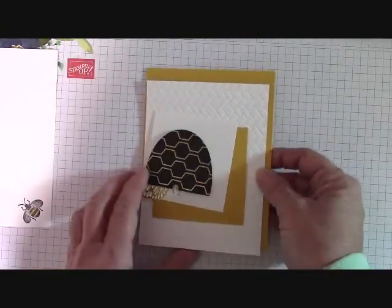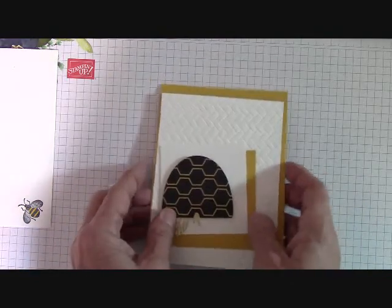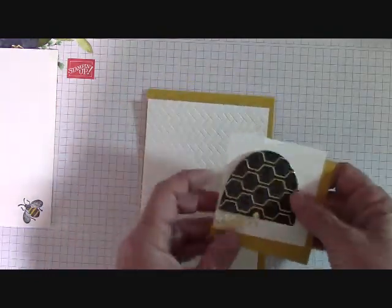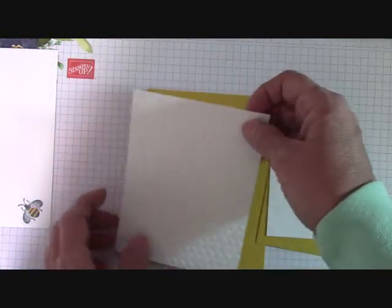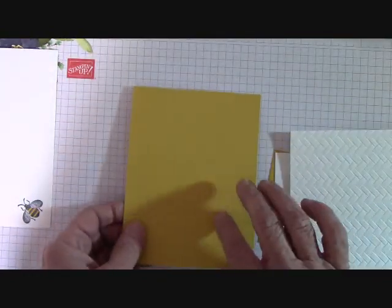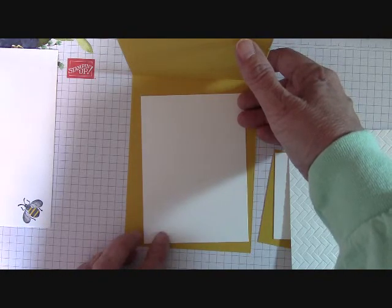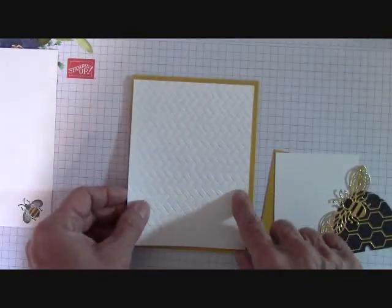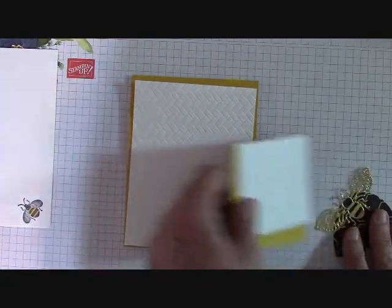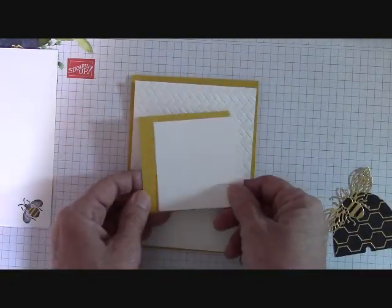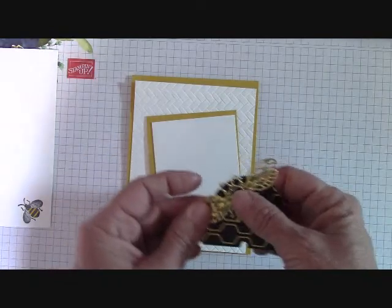Everything will come blank. You can use whatever stamp set that you want. Of course, if you have this one, it works perfectly, right? So what we want to do now is, and this is what you'll get right here. You'll get all these pieces. I'm going to cut out this bee for you. I'm going to emboss this here for you. You'll have a base of crushed curry at 11 by 4 and a quarter, scored at 5 and a half. You'll have an inside piece of regular whisper white, 4 and 3 quarter by 3 and a half. The outside will be embossed with the 3-D coastal weave embossing folder.